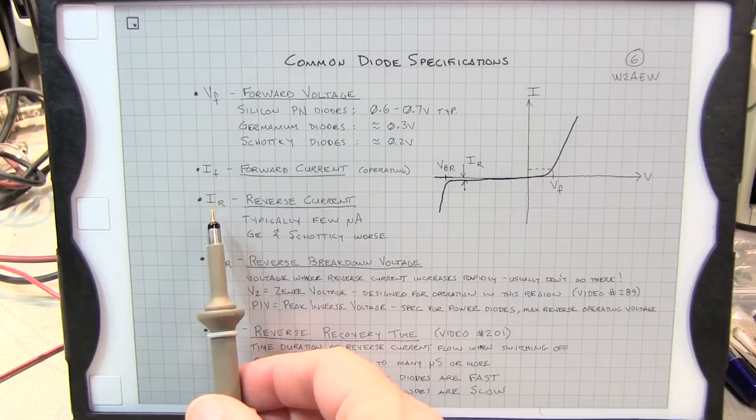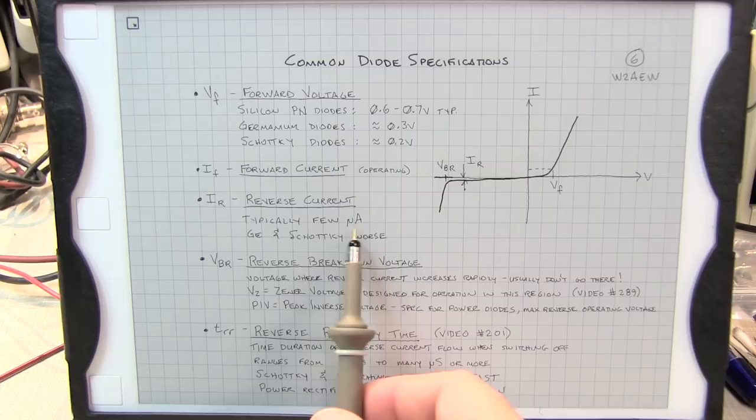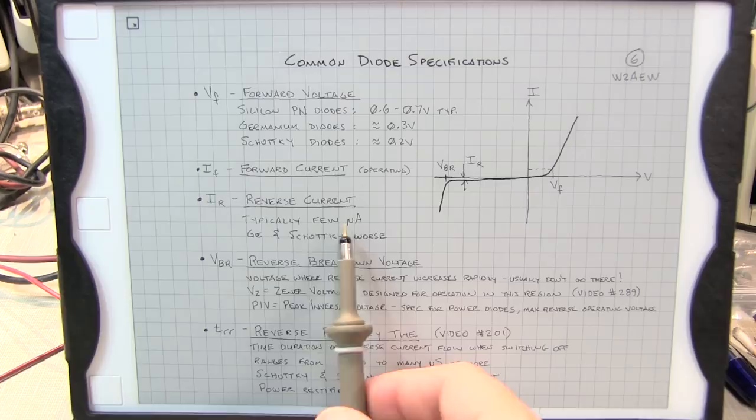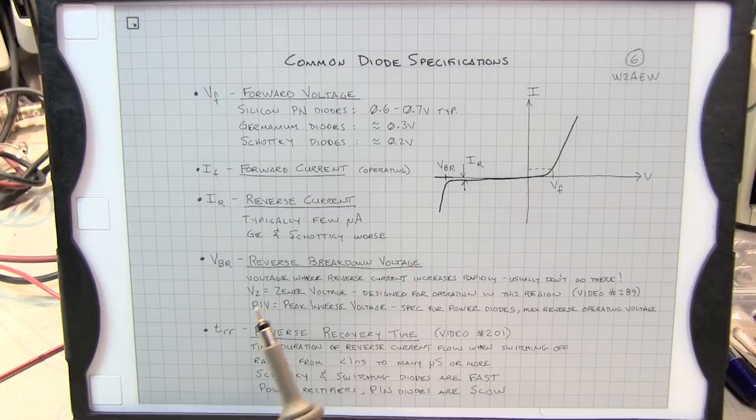For most diodes, it's going to typically be in the single digit microamp region. There will be some diodes which will be much less. They could be in nanoamps or even picoamps, depending on the diode type. Typically, the germanium and Schottky diodes are a little bit worse than the PN junction diodes in terms of reverse leakage current.